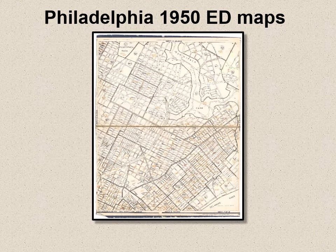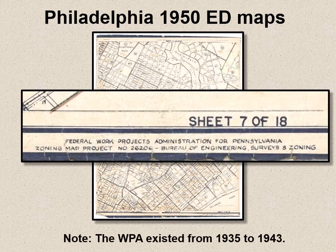The Philadelphia 1950 ED maps consist of 18 sheets. I found on sheet 7 that this was a Federal Works Projects Administration map for Pennsylvania. The WPA existed from 1935 to 1943, so this map is probably from about 1942 — at least 8 years before the actual 1950 census. In those 8 years, World War II ended, there was a baby boom, the GI Bill encouraged people to buy houses, and there was a housing market explosion. There are streets in Philadelphia in 1950 that didn't exist in 1942.